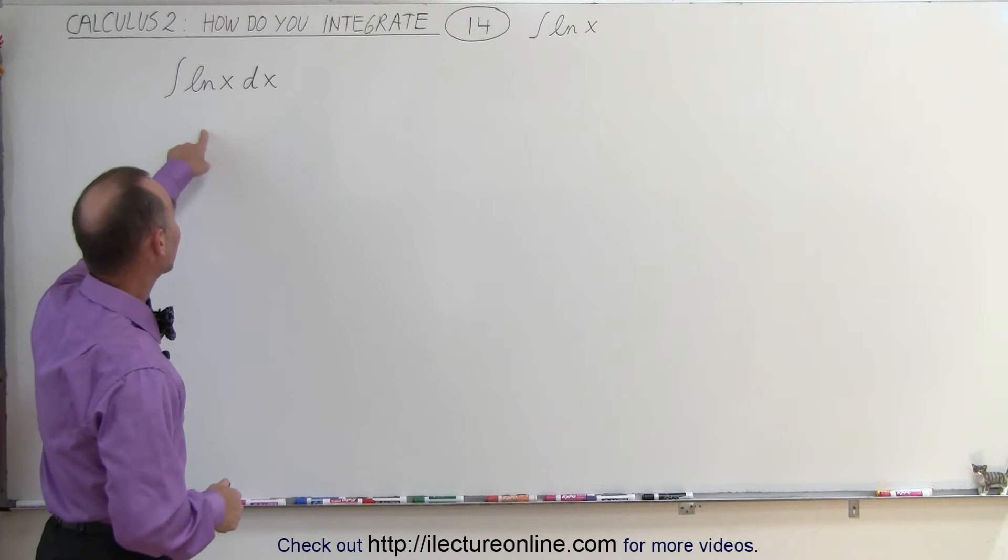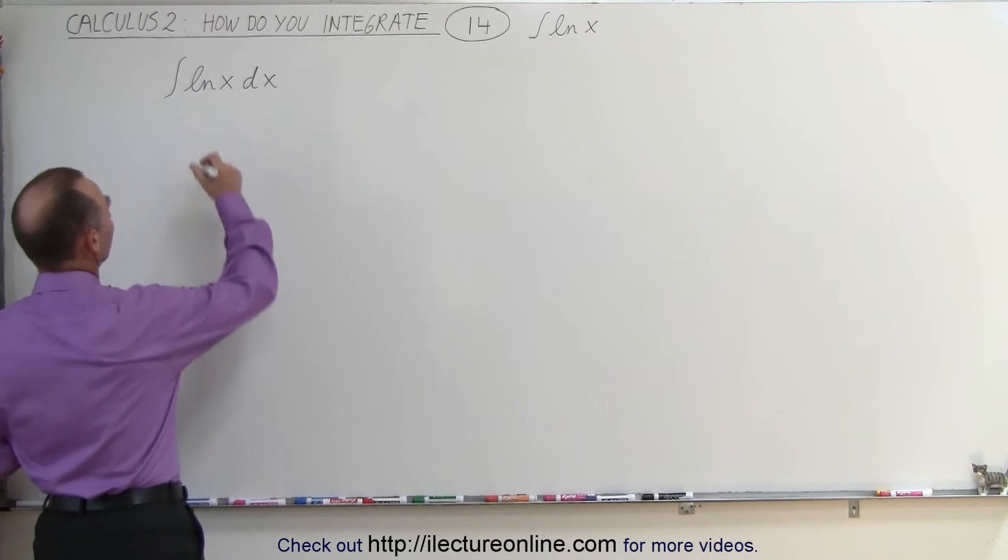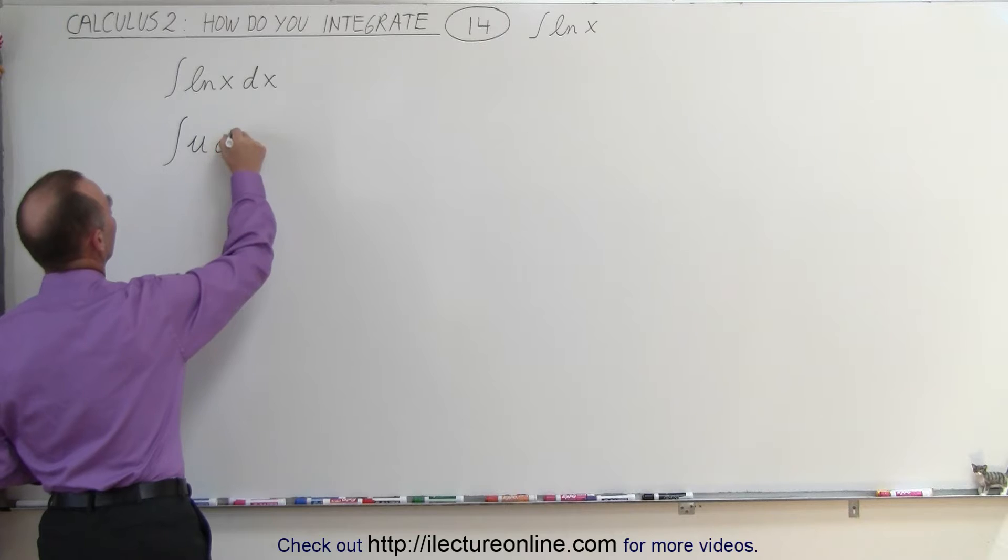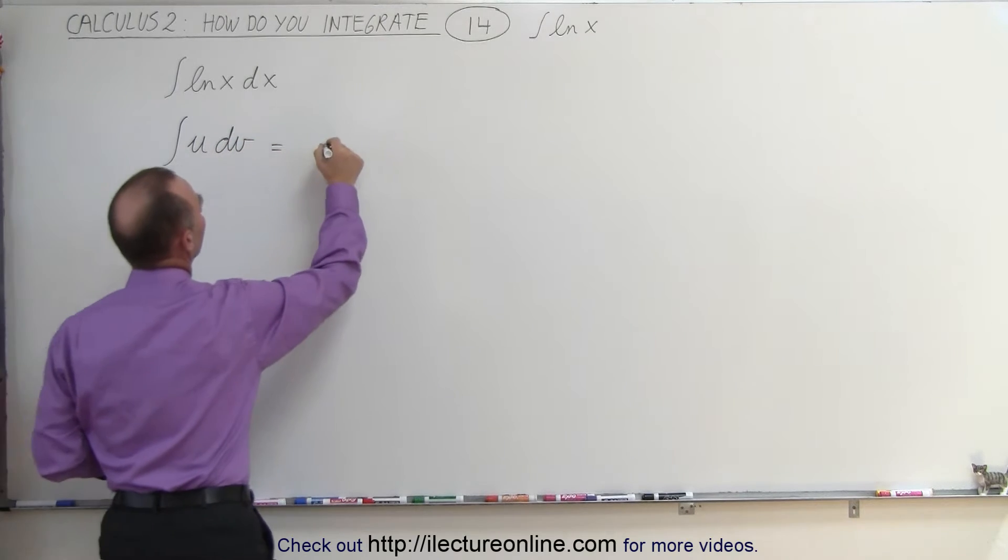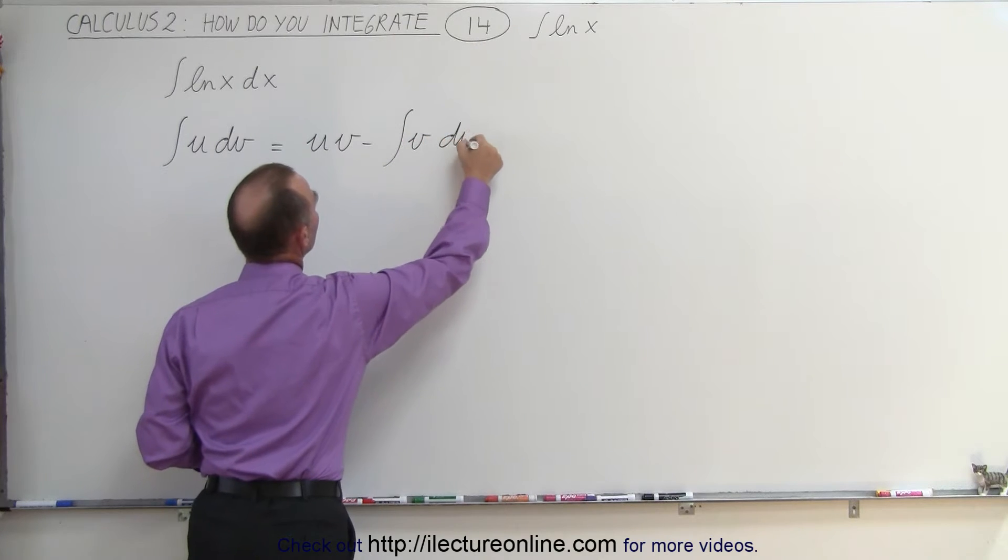We can solve this or integrate this using the integration by parts technique. The integration by parts technique looks as follows: when you have an integral where you recognize a u and a dv, that is equal to the product of u times v minus the integral of v du.